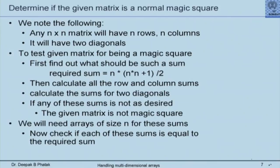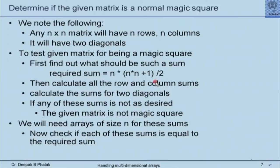To determine if a matrix is a magic square, we tell students that an n×n matrix has n rows, n columns, and two diagonals. We test whether the sum of each row, each column, and each diagonal is the same. There is also a useful relation: for any n×n magic square, the common sum equals n × (n × (n+1) / 2). We tell students we won't prove this — the formula is available in alternate literature.